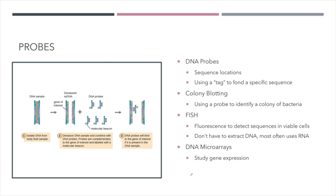Probes are a tool that are used to search for a gene of interest. Many times probes are going to be radioactively labeled so that we can x-ray to look for them, or they will be fluorescently labeled so we can detect them in cells or other areas. DNA probes are used in sequence locations, similar to the Sanger sequencing we looked at — you might consider those dideoxynucleotides a type of probe.